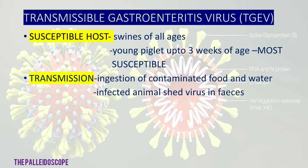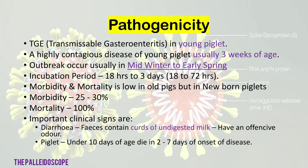The second virus of veterinary importance is TGEV — Transmissible Gastroenteritis Virus. The susceptible host is swine of all ages, with young piglets up to 3 weeks of age being most susceptible. Transmission is by ingestion of contaminated food and water; infected animals shed viruses in feces. Pathogenicity: it occurs mainly in young piglets, usually 3 weeks of age. Outbreaks occur usually in mid-winter to early spring.